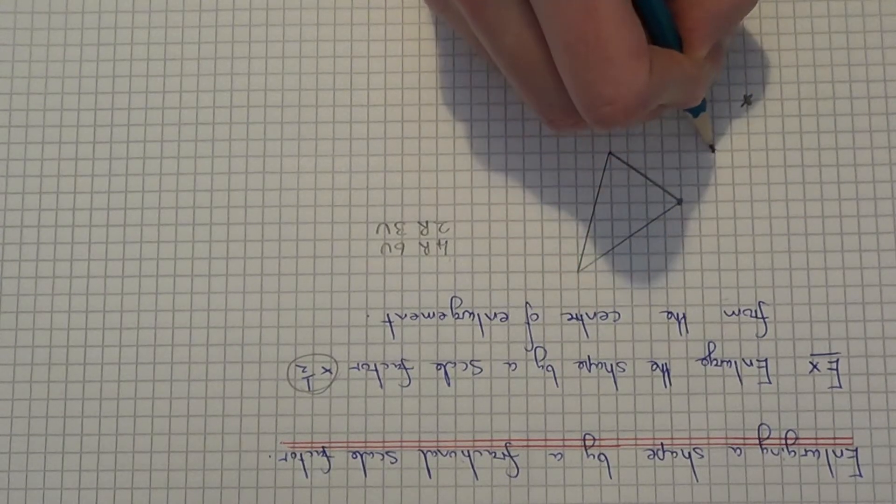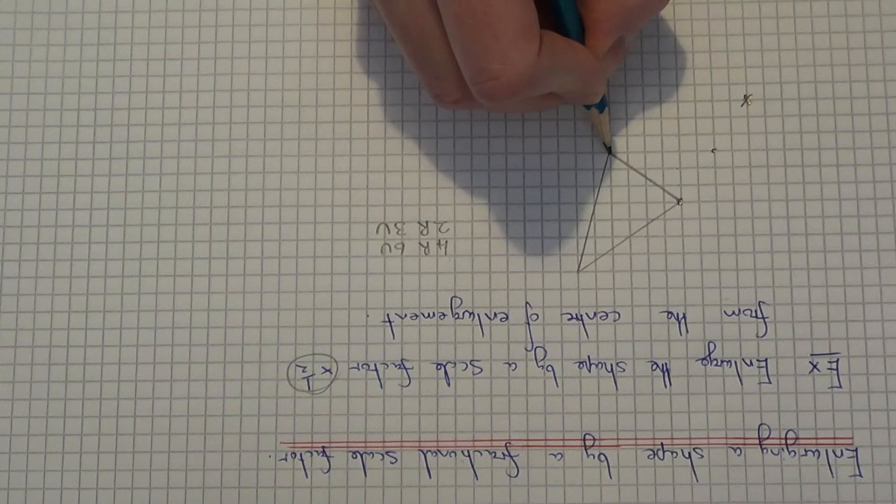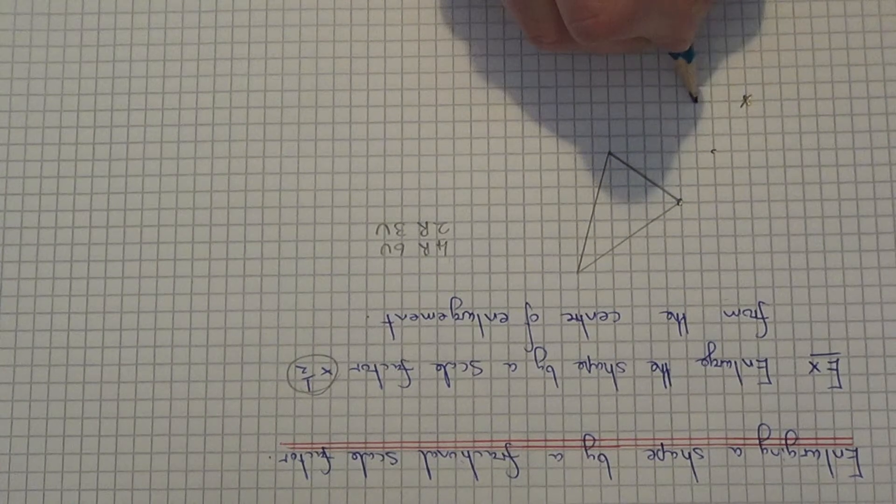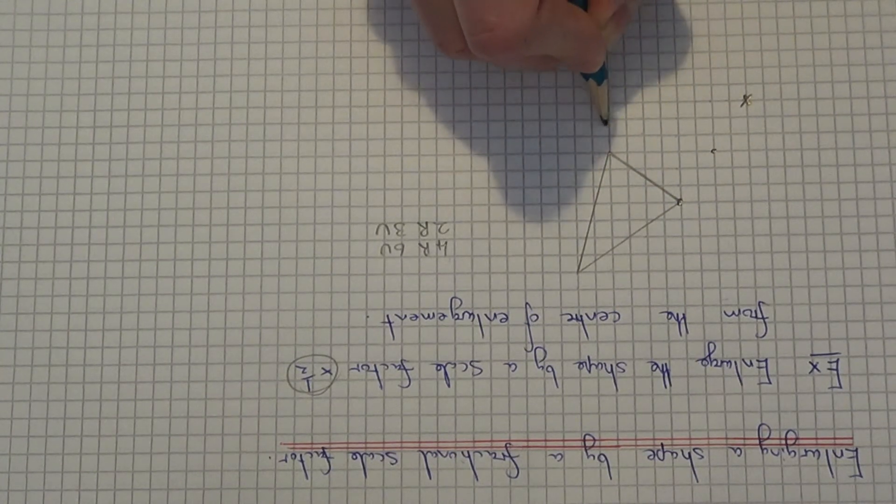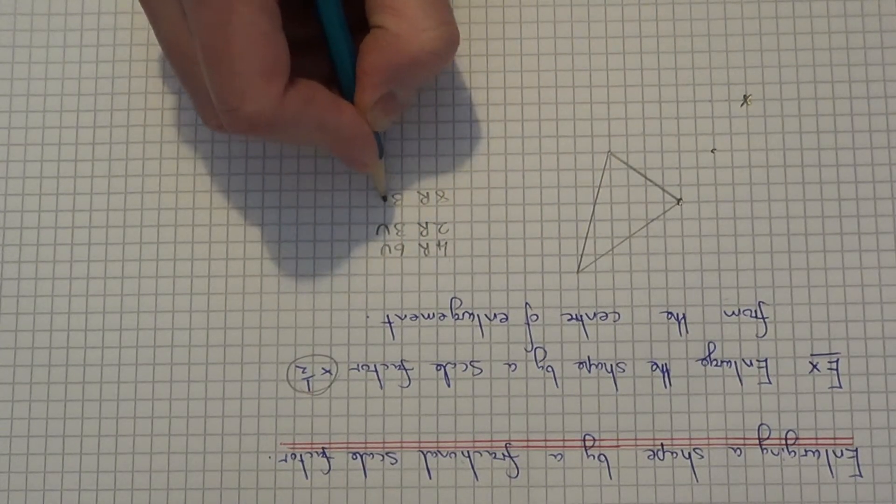So let me do the next corner down here. So I count from the centre to the corner, so it's 8 squares right, 3 squares up.